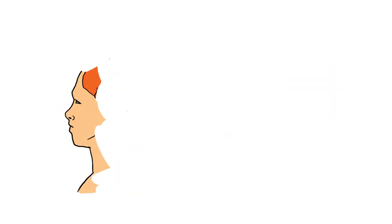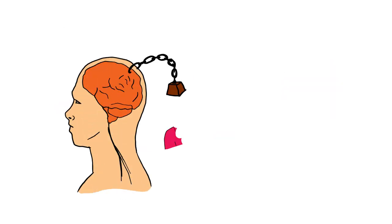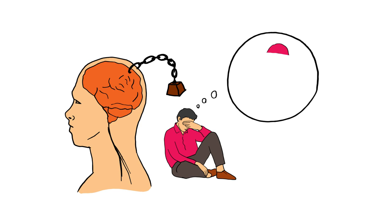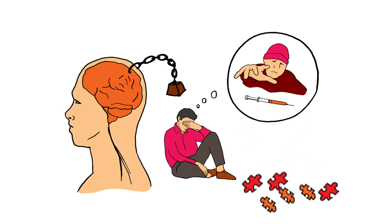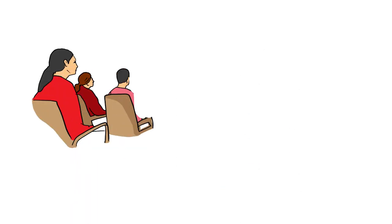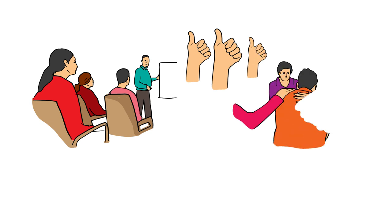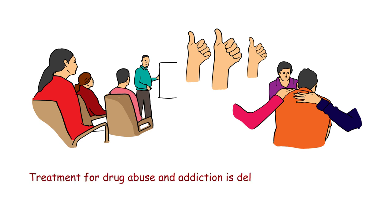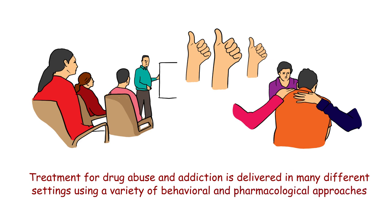Because of addiction's complexity and pervasive consequences, drug addiction treatment typically must involve many components. Some of these components focus directly on the individual's drug use. Others, like employment training, focus on restoring the addicted individual to productive membership in the family and society, enabling him or her to experience the rewards associated with abstinence. Treatment for drug abuse and addiction is delivered in many different settings using a variety of behavioral and pharmacological approaches.